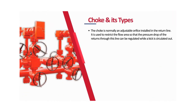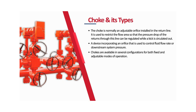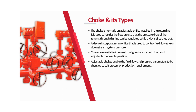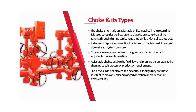Choke and its types. The choke is normally an adjustable orifice installed in the return line. It is used to restrict the flow area so that the pressure drop of the returns through this line can be regulated while a kick is circulated out. It is a device incorporating an orifice used to control fluid flow rate or downstream system pressure. Adjustable chokes enable fluid flow and pressure parameters to be changed to suit process or production requirements. Fixed chokes do not provide this flexibility, although they are more resistant to erosion under prolonged operation or production of abrasive fluids.